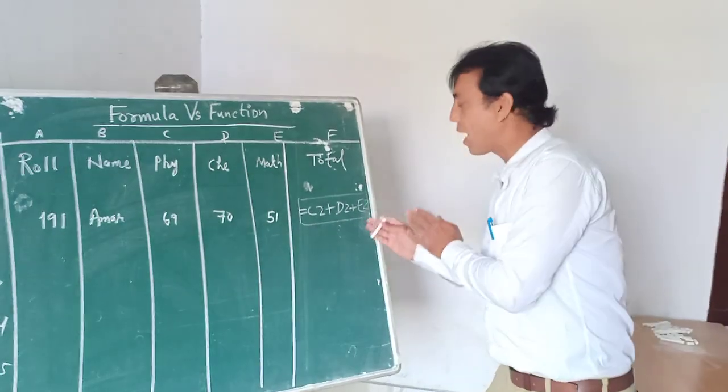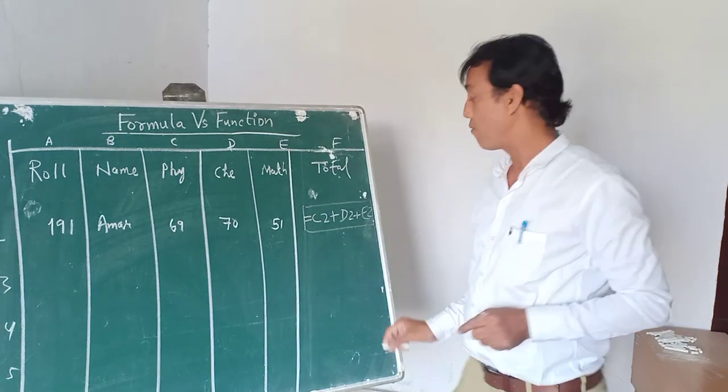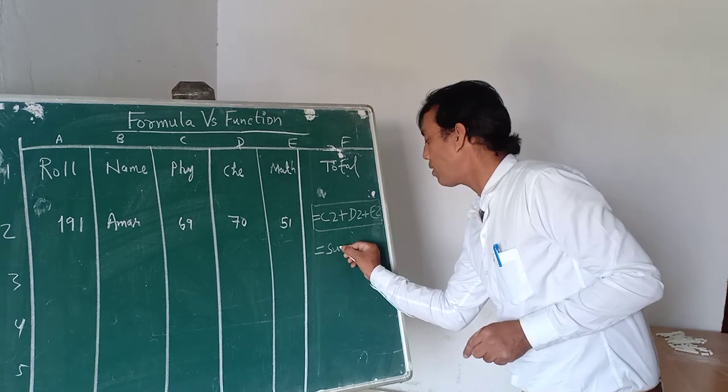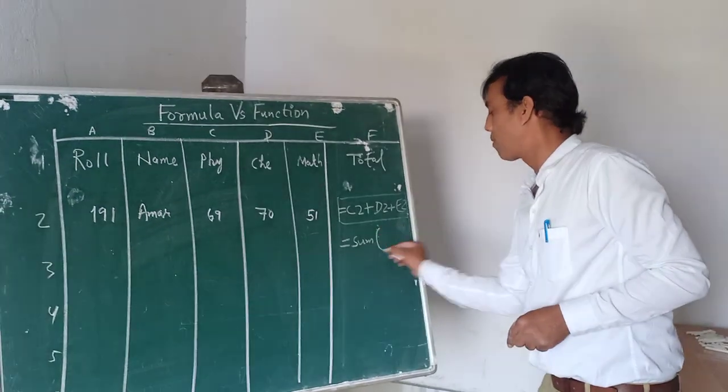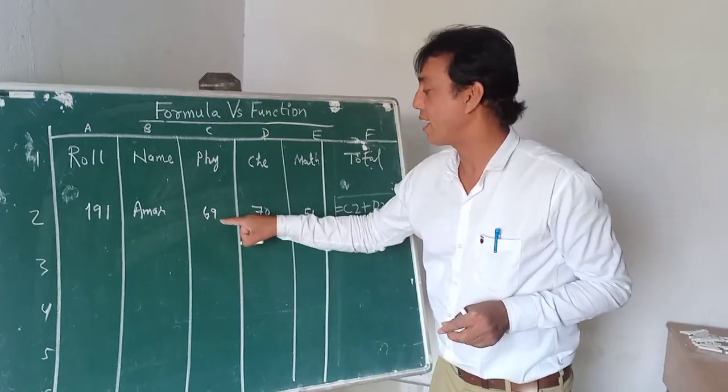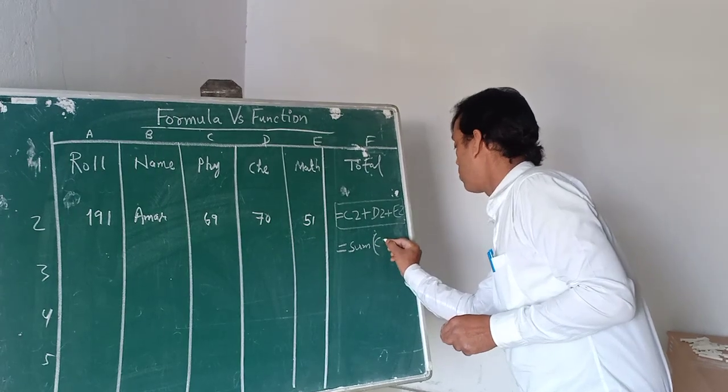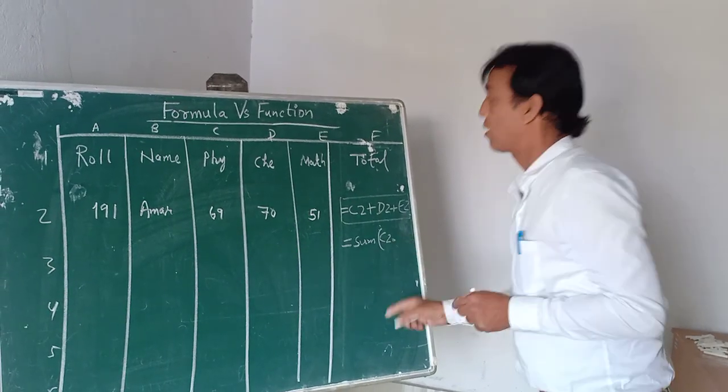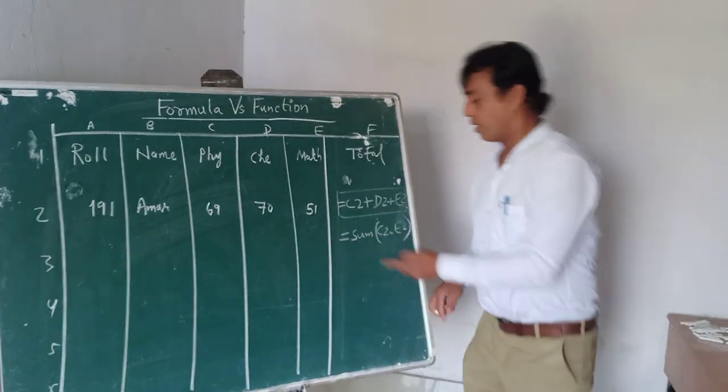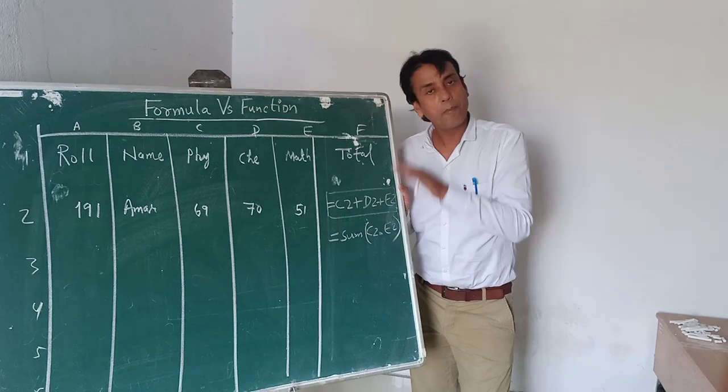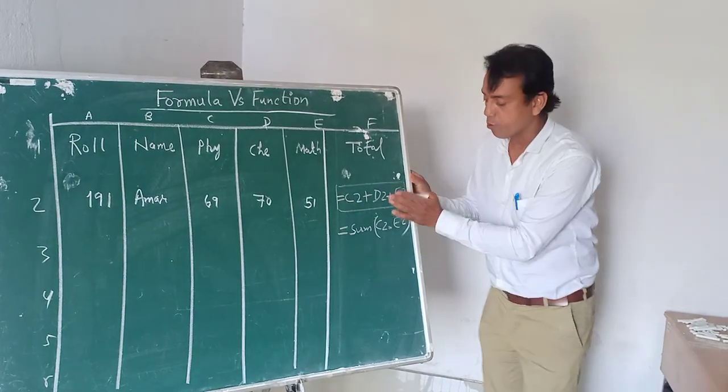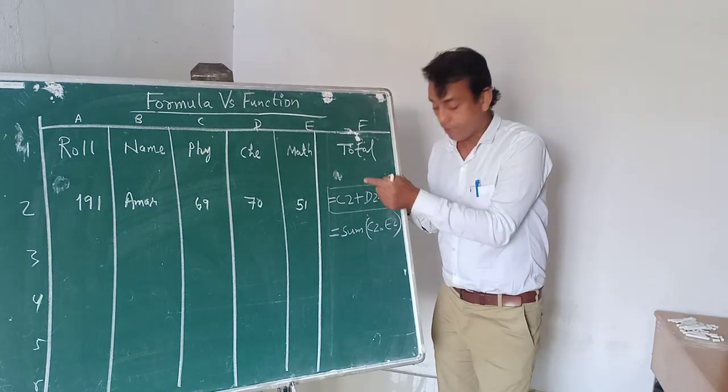The same task we can perform using function as well. We have a function called equals to sum. Put the starting cell address, that is C2 colon E2. This will perform the same task. It will add these three marks and put the total here. This is a function.